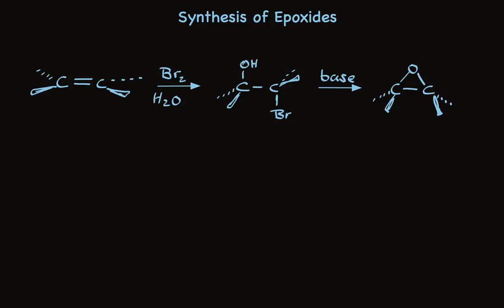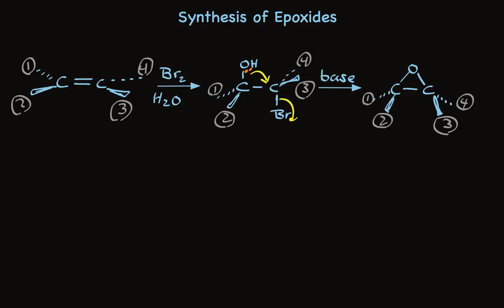This is an internal SN2 reaction. A pair of electrons on oxygen is used to make the new bond with carbon as the bromine leaves with a pair of electrons as bromide. You'll notice that this reaction is also stereospecific. This is easy to see when we number the substituents. Both steps are stereospecific because in both cases, the stereochemistry of the alkene we start with dictates the stereochemistry of the bromohydrin, and the stereochemistry of the bromohydrin dictates the stereochemistry of the final epoxide. And you'll see that the stereochemical result is exactly the same as we got with peracid.